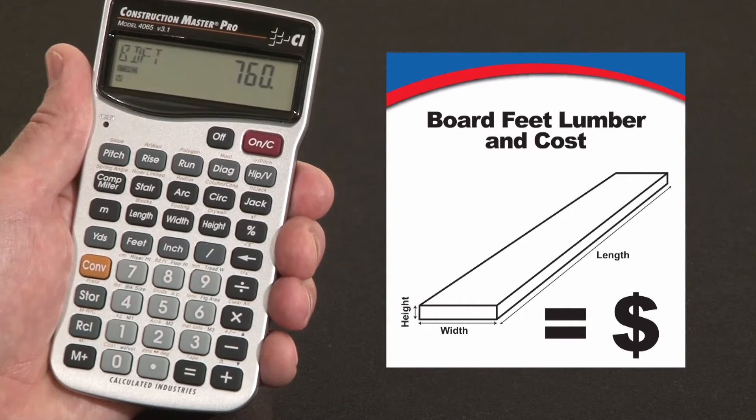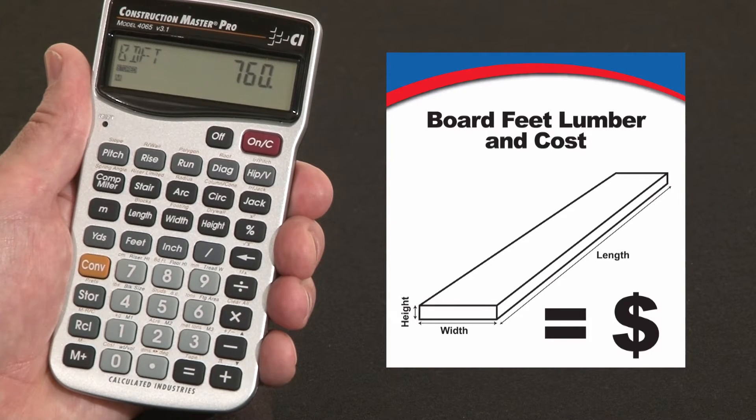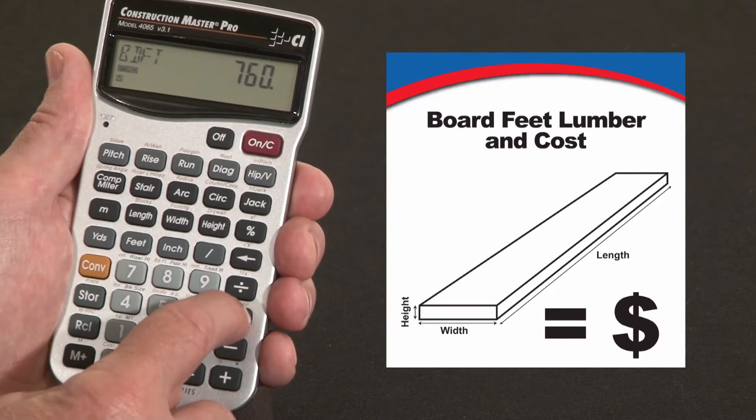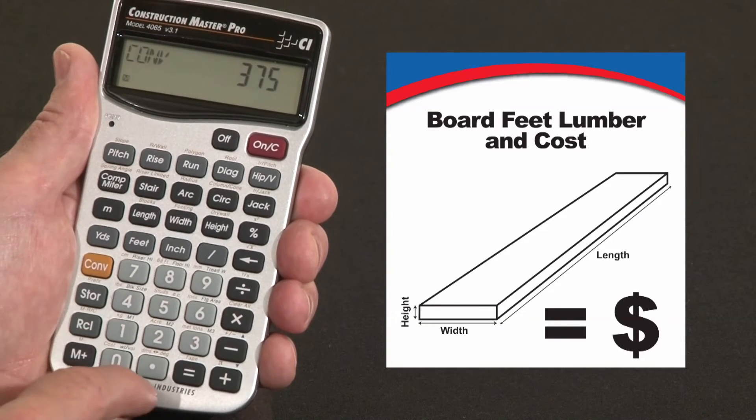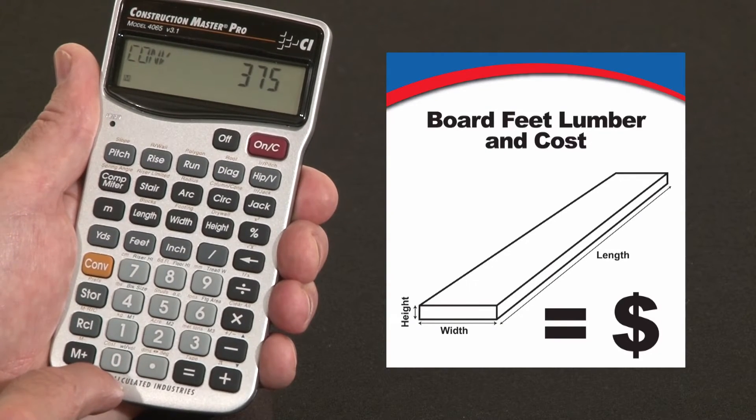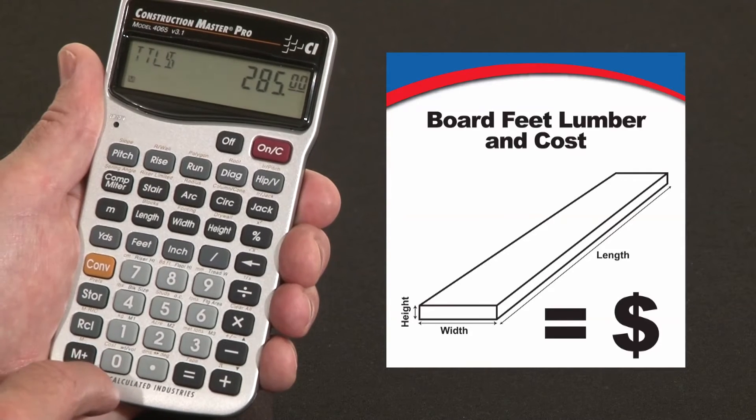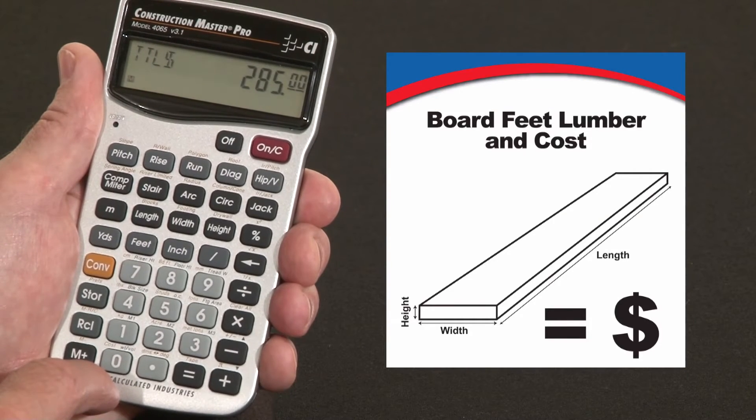Say this particular material goes for $375 per thousand board feet. So I would say times 375, convert, over the zero key is the cost function. So that would be $285 worth of lumber.